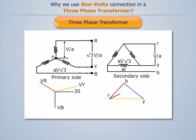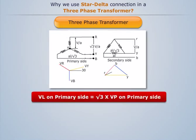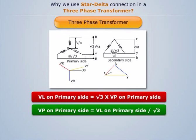As the primary is star connected, line voltage on the primary side is equal to root 3 times phase voltage on the primary side. So phase voltage on the primary side equals line voltage on the primary side divided by root 3.